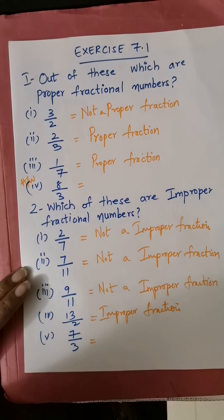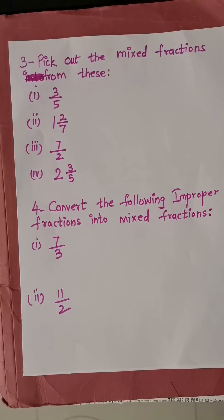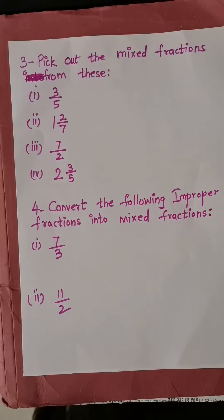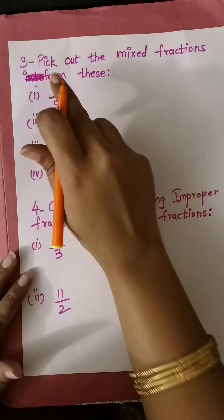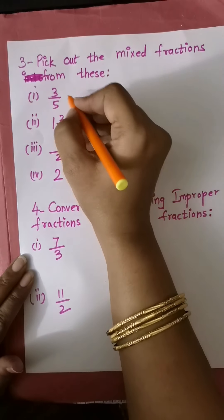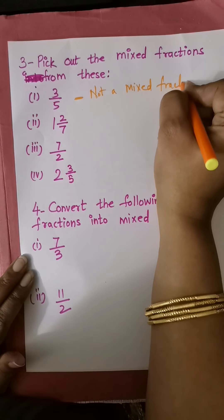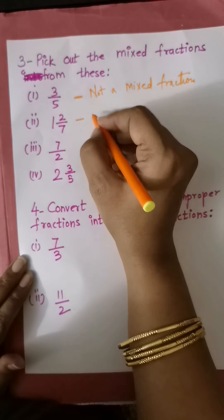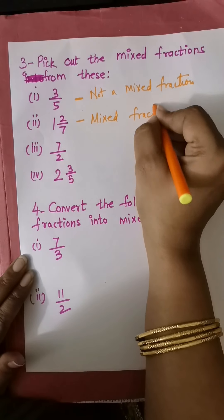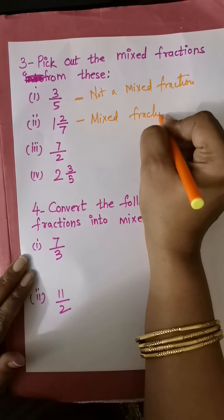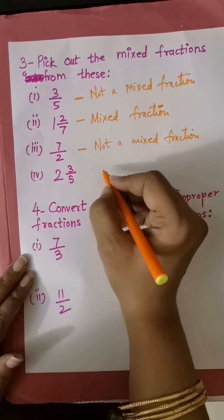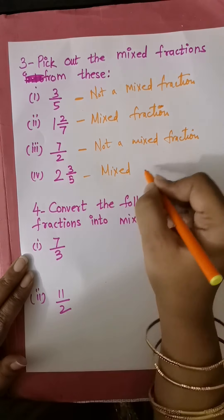Next, pick out the mixed fractions from the given list. Mixed fractions have a whole number part and a fraction part. Is this first one a mixed fraction? No, not a mixed fraction. Is the next one a mixed fraction? Yes, it is a mixed fraction because it has a whole number part and a fraction part. What about the next? Not a mixed fraction. Not a mixed fraction. This one is a mixed fraction — yes, it is a mixed fraction.